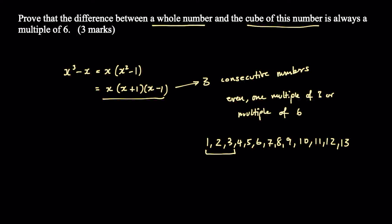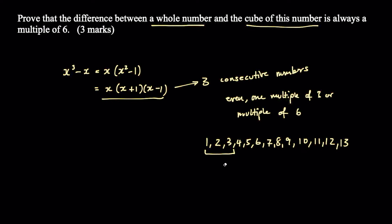Whichever three consecutive numbers you pick, you're always going to have that situation. For example, if x equals five, the next number is six — a multiple of six — which is the x plus one term. So this expression would be five times six times four, which is clearly a multiple of six.